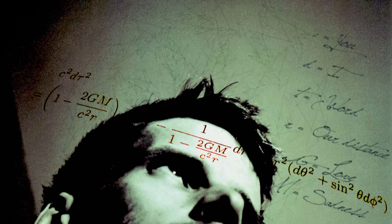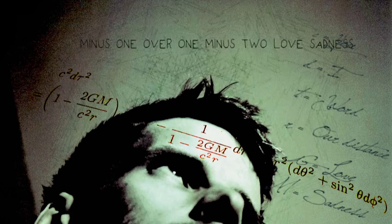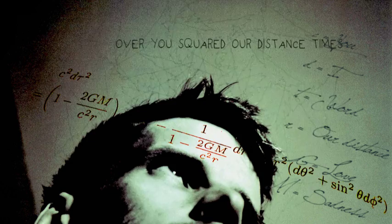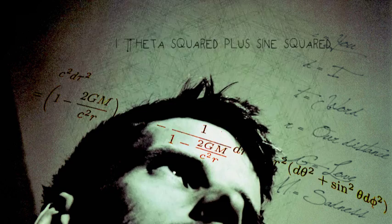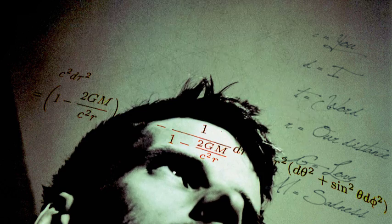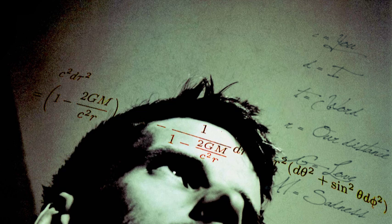Minus one over one minus two GM over u squared our distance, times i-hat our distance squared, minus our distance squared times i-hat our distance squared, plus sine squared theta phi squared.